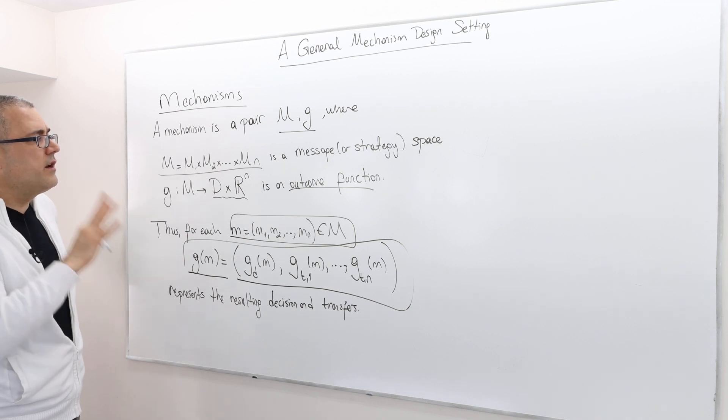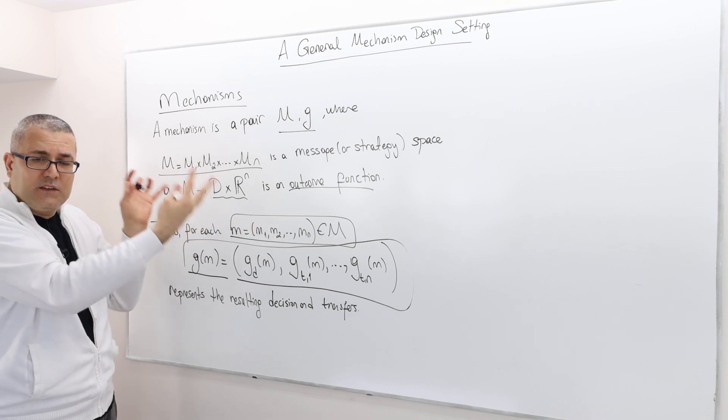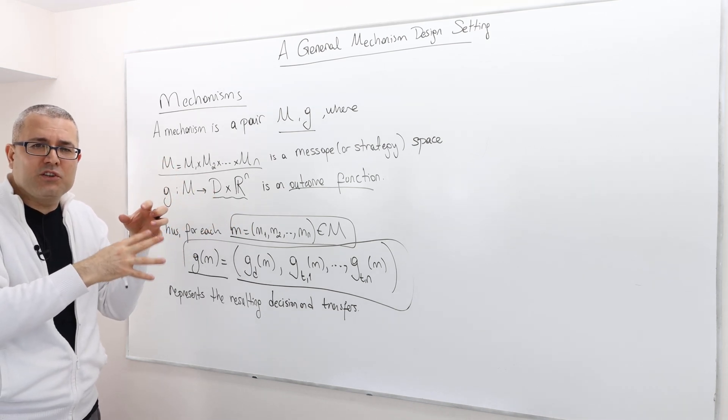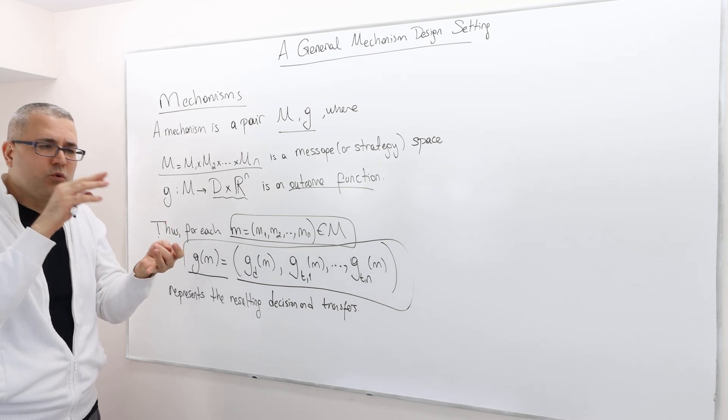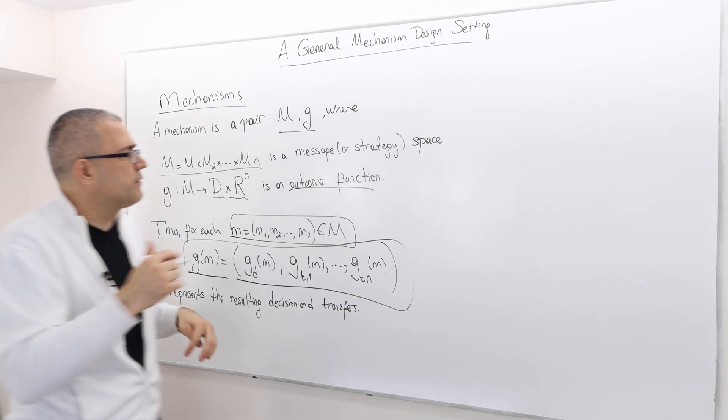Okay. So here is one very important thing. It's like we need to connect the mechanism, this description of mechanism with all the previous things that we mentioned, like decision rule. What else? Transfer function, the social choice function.